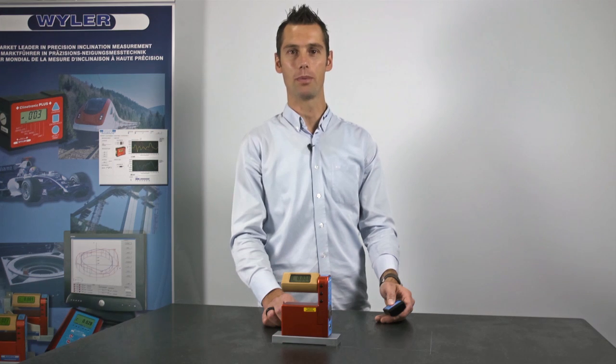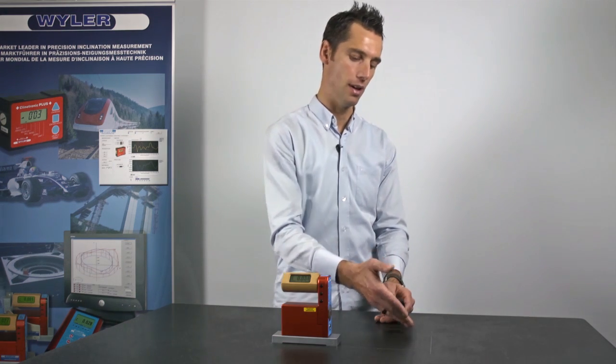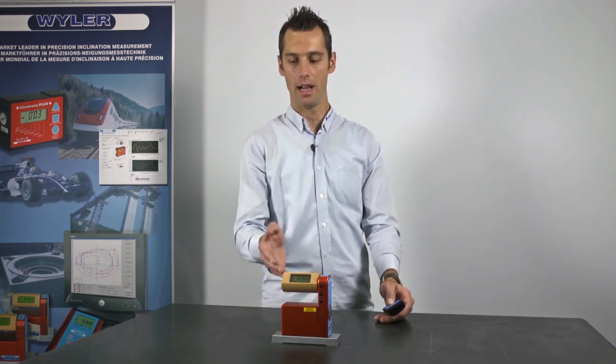Now I'm showing you how to align an object horizontally. In our case, a granite set-in plate, using a Blue Level.